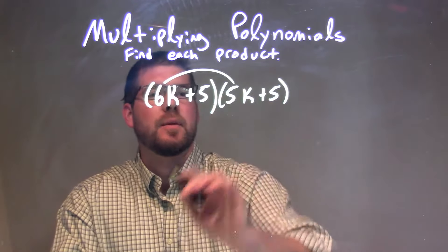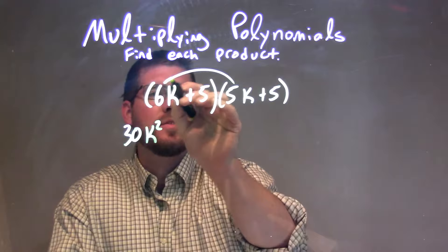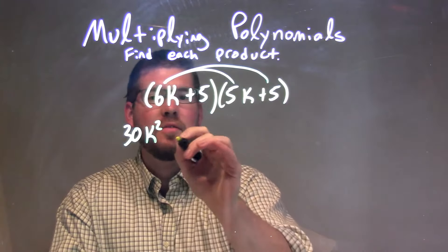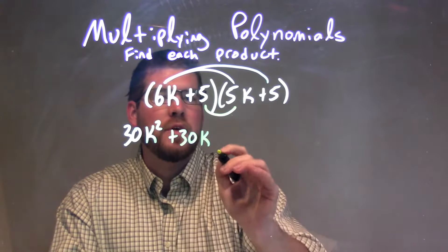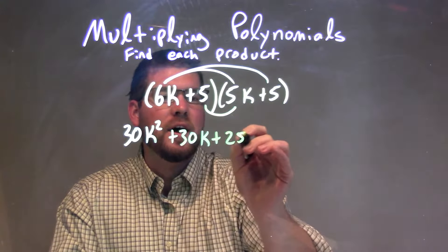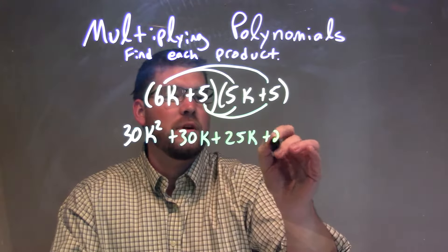6k times 5k is 30k squared, and then 6k times 5 is just 30k. Then we have 5 times 5k is 25k, and 5 times 5 is just 25.